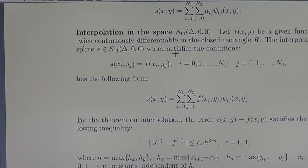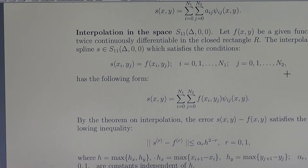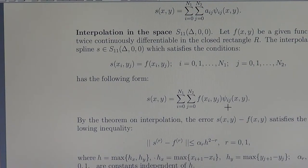Let F be a given function, twice continuously differentiable on the closed rectangle capital R. The interpolating spline S of this space satisfies the condition that S at the grid nodes x_i, y_j equals the given values of the function F at x_i, y_j, for all nodes in the grid delta. This interpolating spline has the following explicit form: it is the double sum of the values F(x_i, y_j) times Psi_{i,j}(x, y), with the coefficients being the values of the function F.